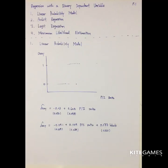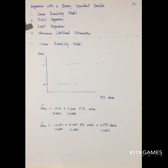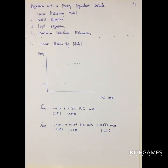Hello everyone. In this video, we talk about regression with binary dependent variables. First, we'll take a look at the linear probability model. Second, we'll take a look at two nonlinear models for the binary dependent variable cases. They are called probit regression and logit regression. Finally, we'll take a look at maximum likelihood estimation, which is used to estimate the betas in the probit and logit model.